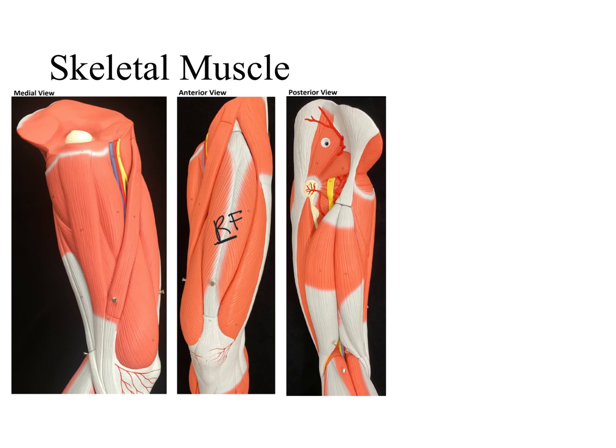We have the vastus lateralis on the lateral side of the rectus femoris, the vastus medialis on the medial side, and posterior to the rectus femoris, the vastus intermedius. Together, the rectus femoris, vastus lateralis, vastus medialis, and vastus intermedius are four muscles that form the quadriceps femoris. They are named quadriceps because the root quadru means four, just as we had four quadrants when we divided the abdominal cavity.